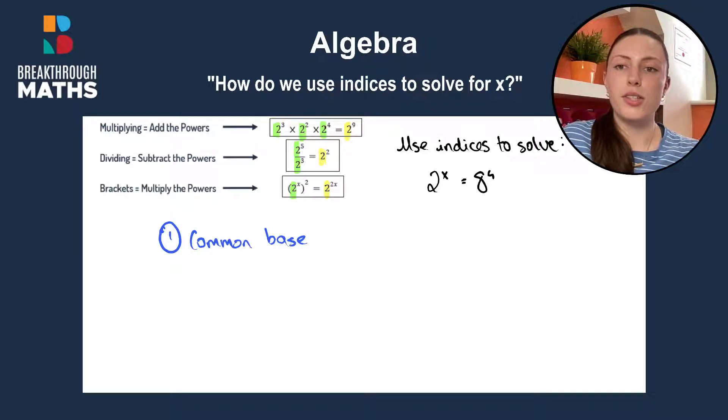Then we need to look at our rules. If we are multiplying, we have all the multiply signs. That means we add the powers. So we'll have 3 plus 2 plus 4 keeping our common base gives us 9, so 2 to the power of 9.